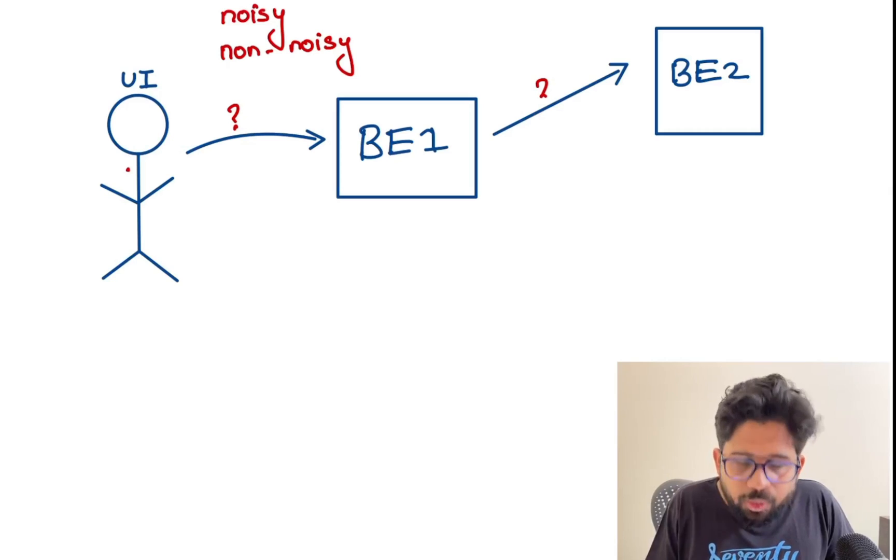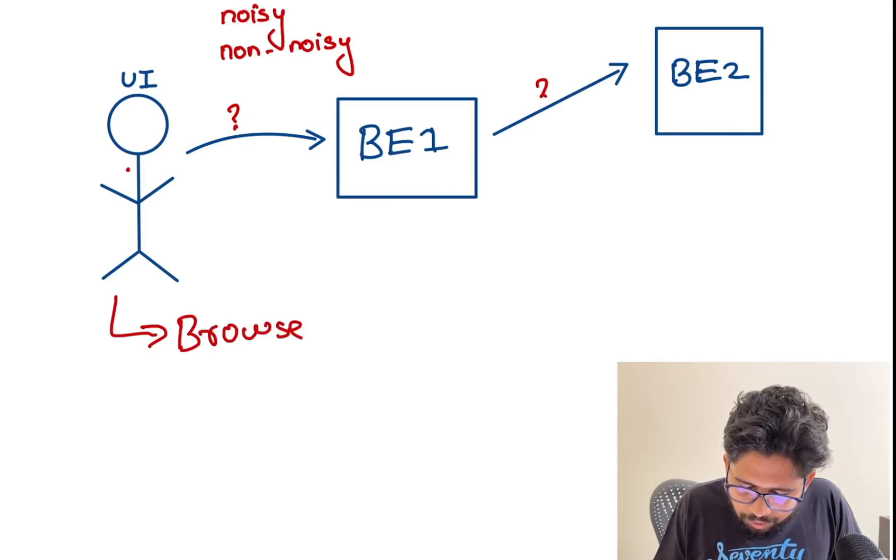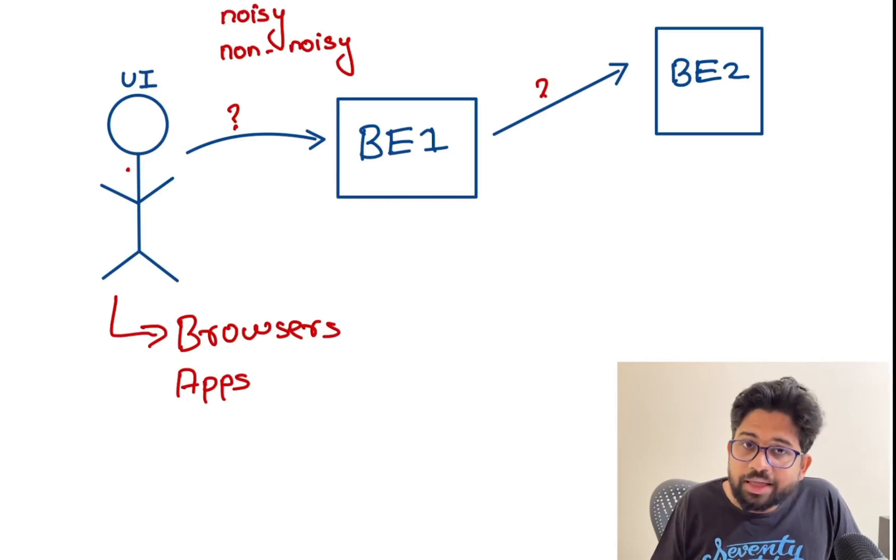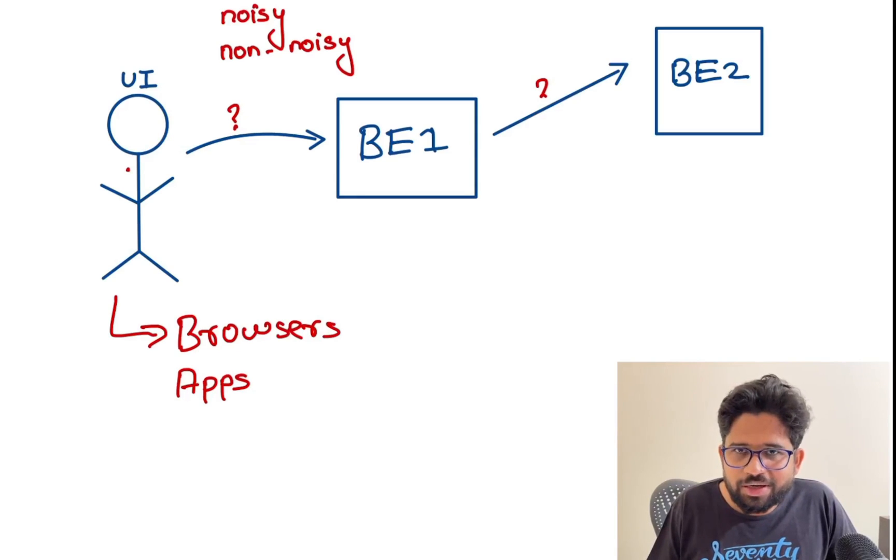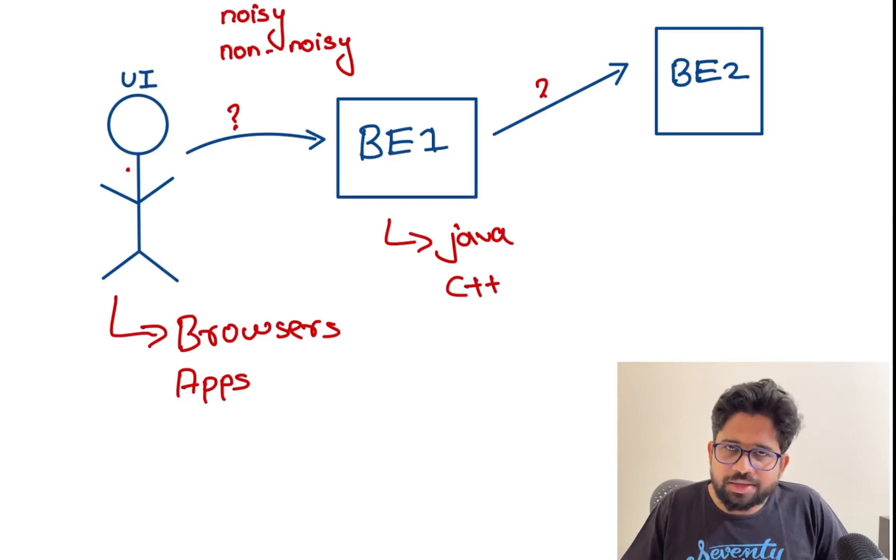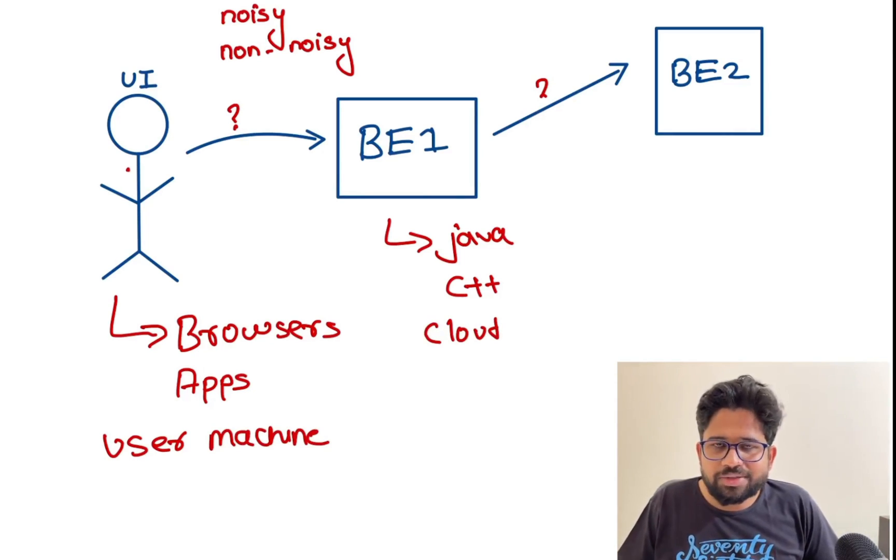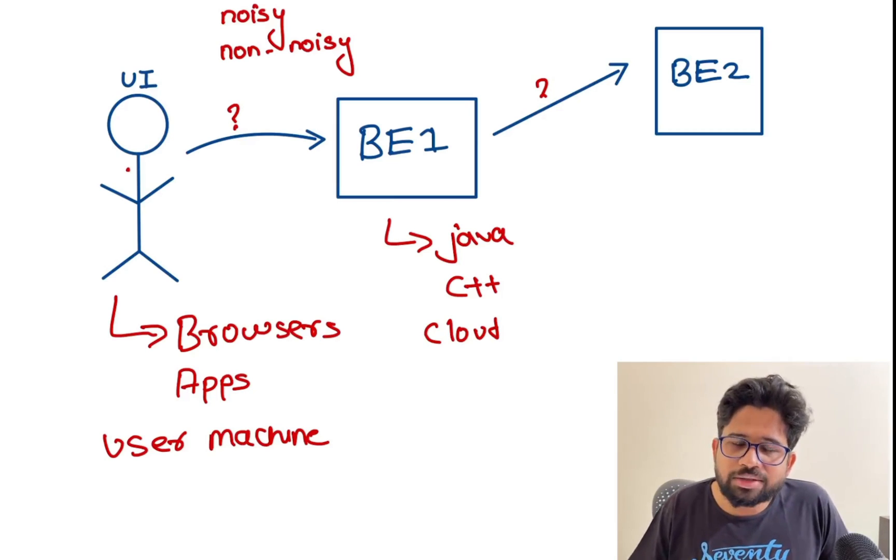For non-noisy communication, if we zoom in between the UI and backend, what will be the UI options? Browsers and apps—they can be Android or iOS apps. What will be the backend services? Services hosted on cloud written in Java, C++, or C#. The communication between client and server happens mostly through browsers or applications, so they need to be supported on those user machines.